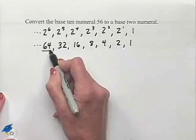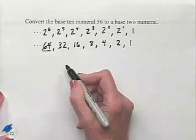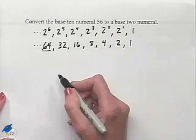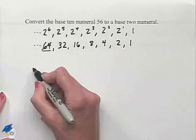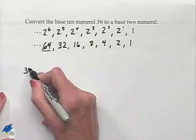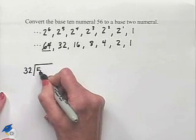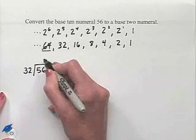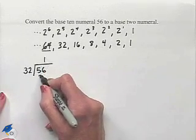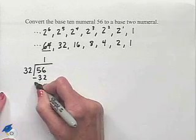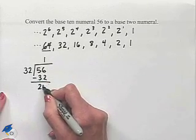We see that 64 is too large, so we're going to eliminate that from our work because it's larger than 56. 32, however, will divide into 56, so we'll begin there. 32 divides into 56 one time. Multiplying gives us 32, we subtract to come up with 24.